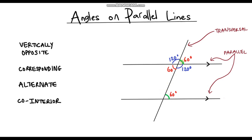These two angles are corresponding angles, and corresponding angles are always equal. The 120 degree angle at the top corresponds with this angle below, so that's also 120 degrees. Similarly, this 120 degree angle corresponds with another, giving 120 degrees. And finally, the 60 degree angle corresponds with this one, so it's also 60 degrees.